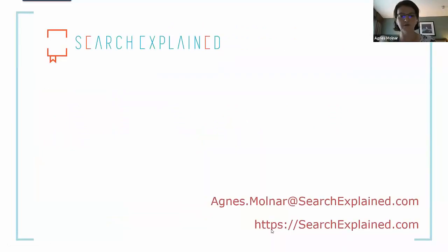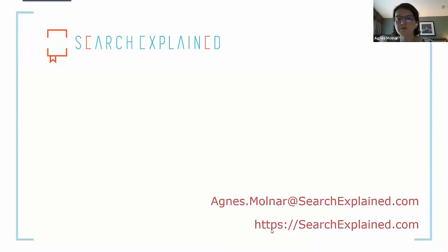I can see we have a lot of questions. Switching to Q&A now. First question from Chris: the Microsoft Graph API only supports searching limited SharePoint content like sites - will there be graph support for SharePoint content in the new features? My understanding is yes, this is what they are working on these days. However, I'm not a developer, so I cannot tell you all the details, but my understanding is it will be much smarter and more advanced.